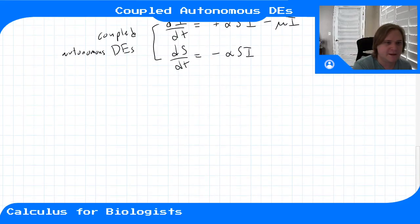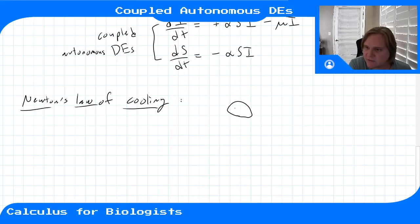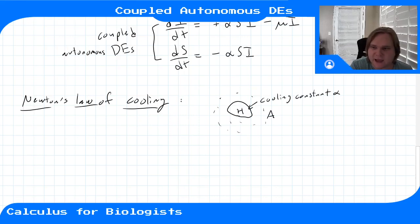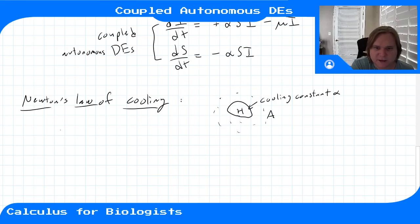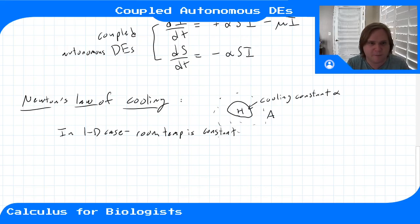Another example comes from Newton's Law of Cooling. In the one-dimensional case, we had an object with temperature h sitting in a room at temperature a, with a cooling constant alpha. We assumed the room was so large that the object couldn't really affect the room temperature — the room temperature was constant, not affected by the object being heated or cooled.